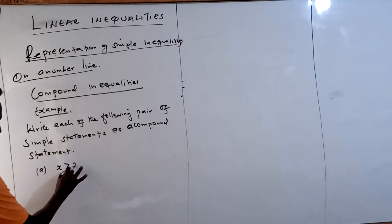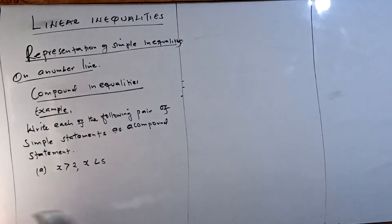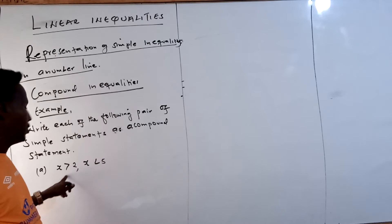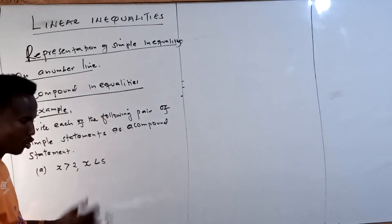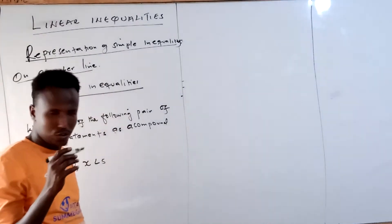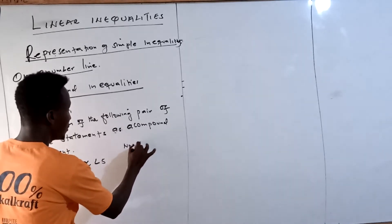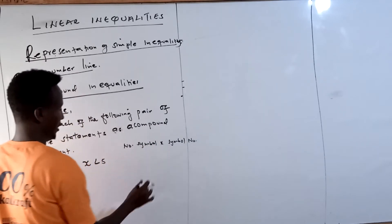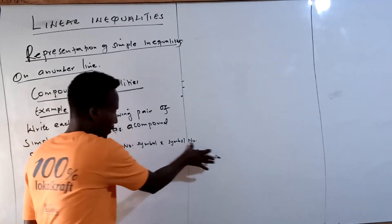Here is an example. We have: x is greater than 2, comma, x is less than 5. These are two simple inequalities separated by a comma. We want to join them together to make one compound inequality. The format must follow this order: number, inequality symbol, x, inequality symbol, then number.